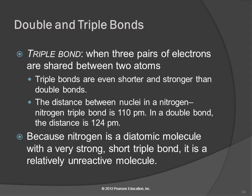Triple bonds are going to be even shorter and stronger than double bonds. For nitrogen, a triple bond is 110 picometers compared to 124 for a double bond. Nitrogen is a rather unreactive gas — there's a lot of it in the air, but it's not very reactive. That has to do with its triple bond — that short, strong bond means each nitrogen atom has an octet and there's not a lot of motivation to react.